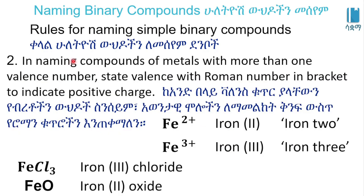In naming compounds of metals with more than one valence number, we use Roman numerals in brackets to indicate the positive charges. An example is iron, which can have different oxidation states balanced with Roman numerals in brackets to indicate positive charges.